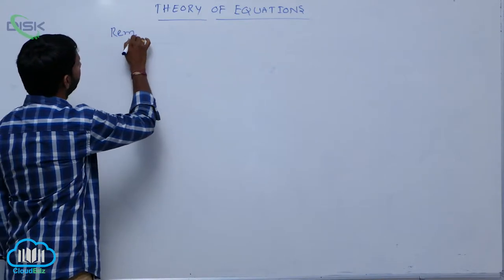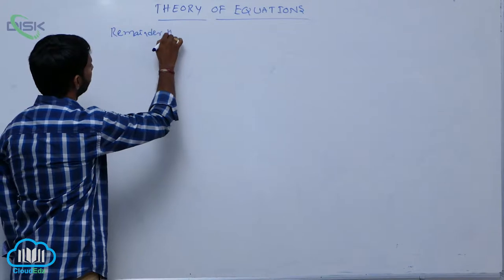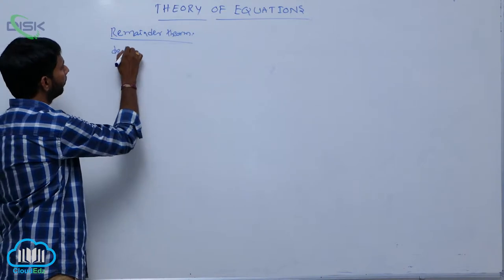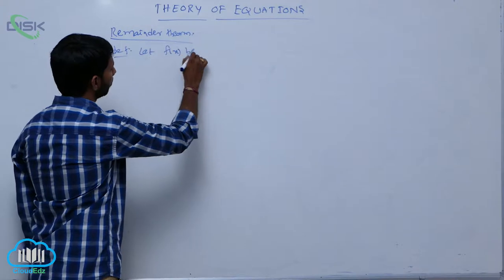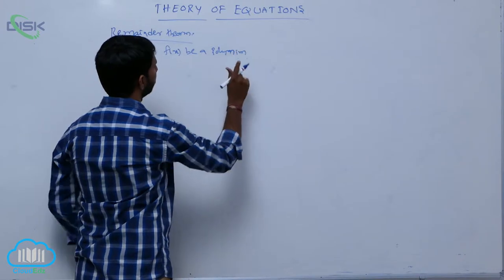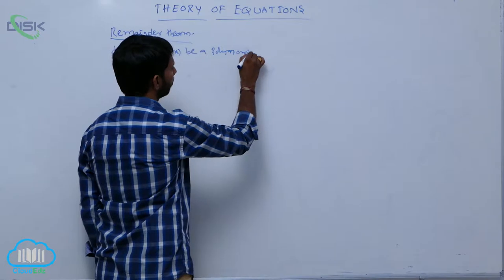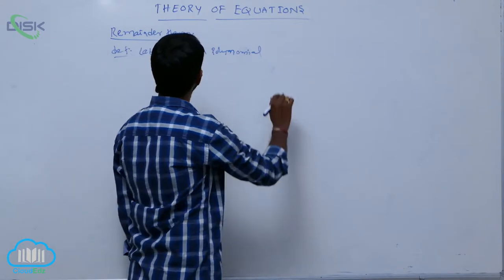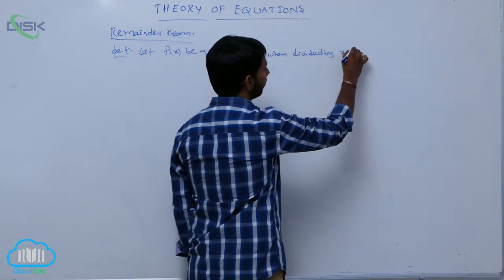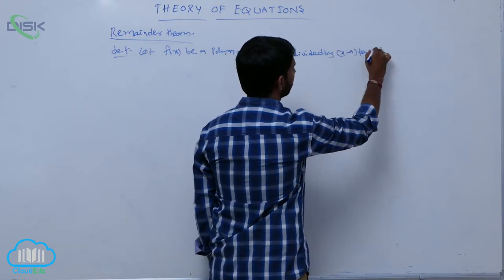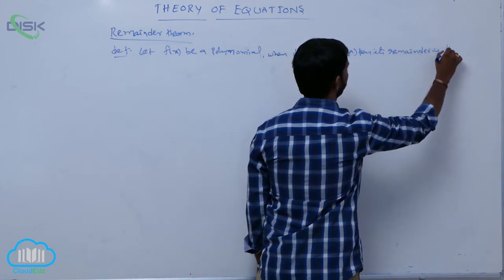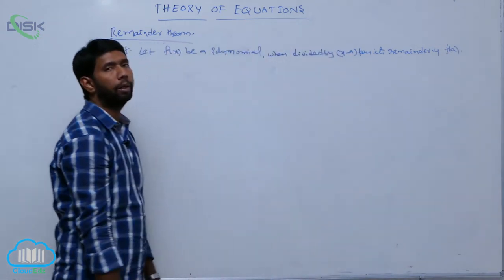Remainder theorem: Let f of x be a polynomial. When divided by x minus a, then its remainder is f of a.